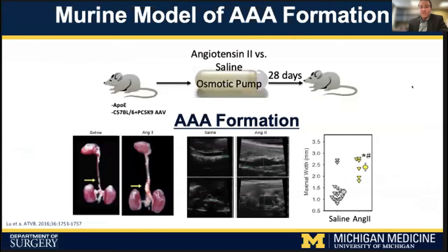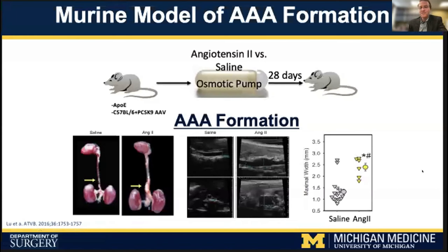Given the increase in JMJD3 expression within human abdominal aneurysm tissue samples, we sought to better understand the potential mechanisms driving JMJD3, as well as its role within macrophage inflammation. We turned to our murine model of aneurysmal disease. In our lab we use the angiotensin-2-induced abdominal aneurysm model, which mirrors human pathology of aneurysmal disease. It involves hypercholesterolemic mice with implantation of an osmotic pump that infuses either angiotensin-2 or saline to produce hypertension. The combined effects of hypercholesterolemia and hypertension produce a notable abdominal aneurysm dilation, shown here on ex vivo analysis as well as in vivo ultrasound measurements.